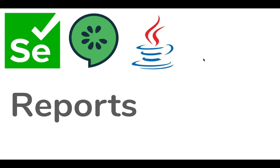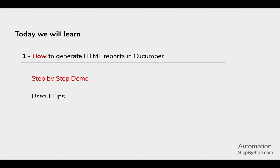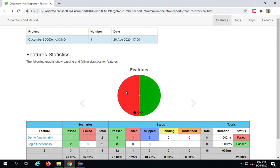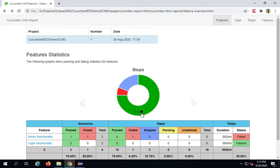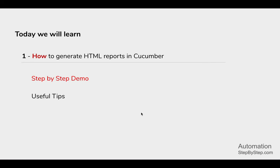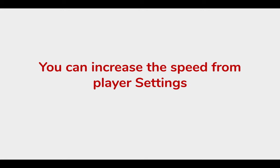Hello and welcome to this session. In this session, I'm going to go step by step and from scratch, we are going to learn how to create HTML reports in Cucumber. This is going to be very easy and very interesting. In a moment I will show you how you can create reports like this with your existing Cucumber Maven project. We are going to use Maven Cucumber Reporting here.